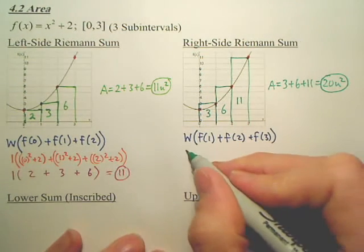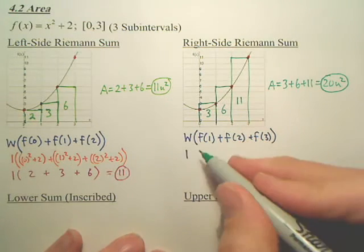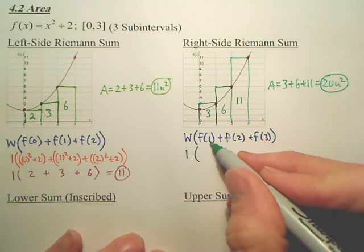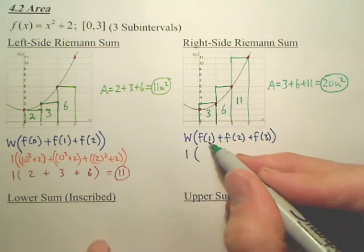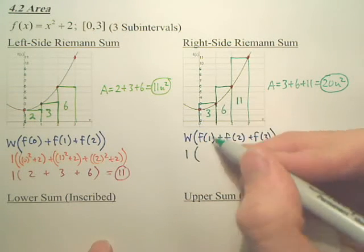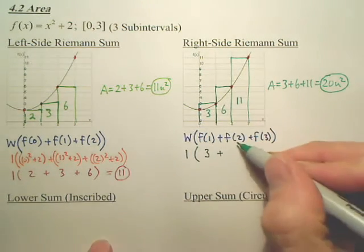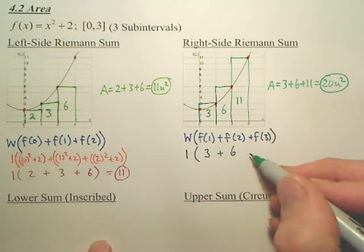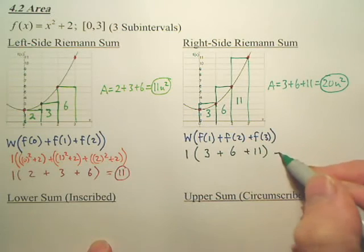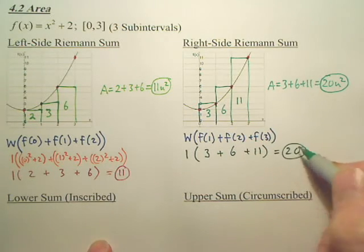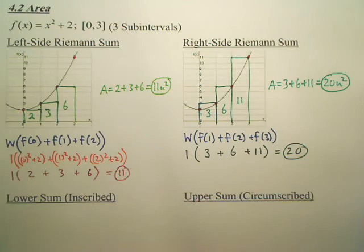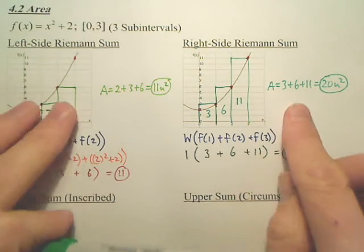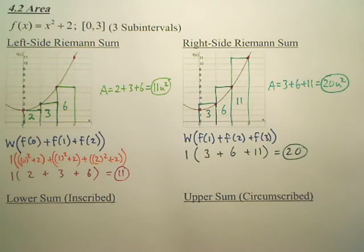For this one, wouldn't the width be 1? I'm not going to do all the calculations, but what's f of 1? f of 1, well, the output is 3. f of 2, well, the output here is 6. f of 3, the output is 11. You get the same answer. This is a mathematical way of seeing it, this is a graphical way of seeing it. You have to be able to kind of do both.